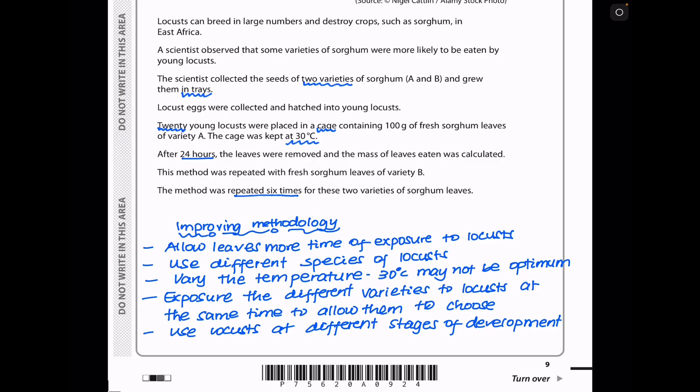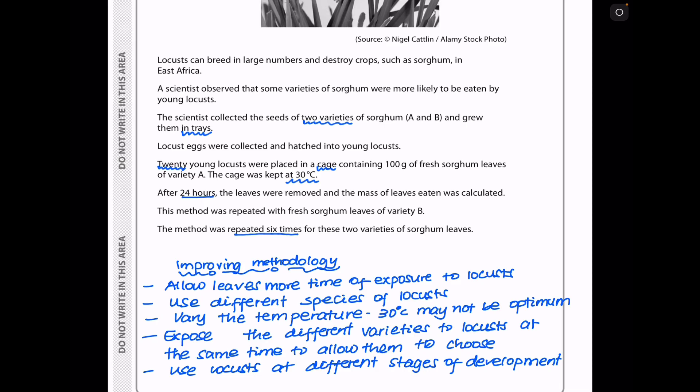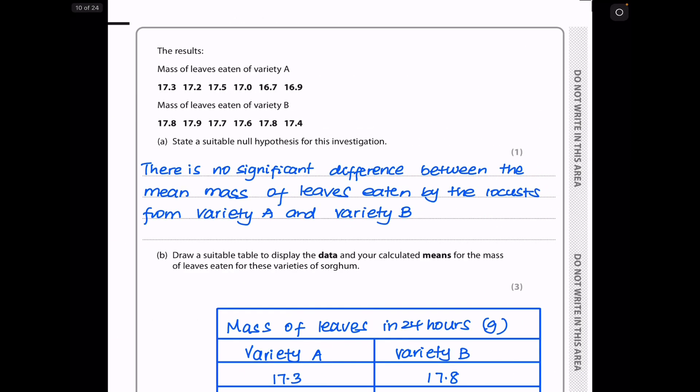The method was repeated with fresh sorghum leaves of variety B. And the method was repeated six times for these two varieties of sorghum leaves. The experiment was carried out at only 30 degrees, but we do not know if these conditions are the ideal conditions to maximize the experimental results. Also, the locusts were only exposed to the leaves for 24 hours, and this time may not be enough to make conclusive results. So the methods that could be used to improve the methodology based on the information we're given here is, they could have allowed more time of exposure to the locusts, and they could have used different species of locusts. They could also vary the temperature. Instead of using 30 degrees only, they could use other temperatures. They could also expose the different varieties of sorghum to locusts at the same time to allow them to choose whichever sorghum variety they want to go to. And then they could also use locusts at different stages of development. So here the results are, we have the mass of leaves eaten by variety A and the mass of leaves eaten by variety B.